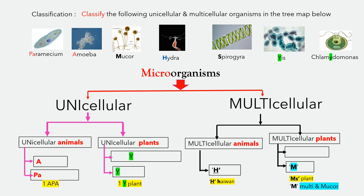Classify the following unicellular and multicellular organisms in the three maps below.